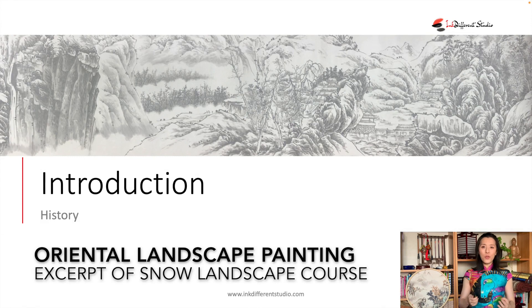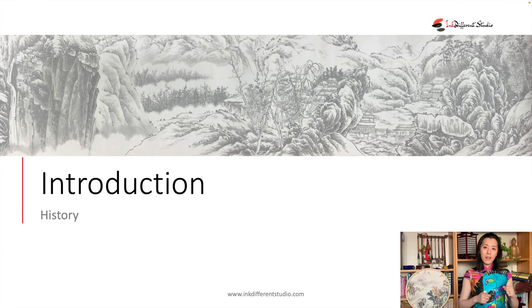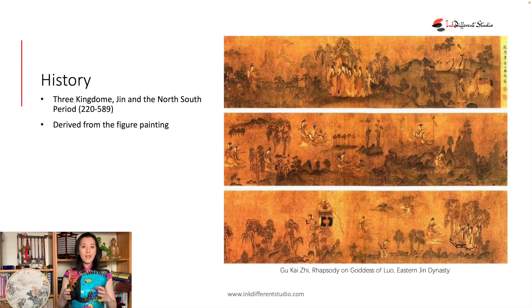Welcome to the Ink Different Studio. This is Fiona speaking. Today we're going to talk about the overview of the history of oriental landscape painting. We call it either mountain-water painting — literally 'shanshui' — or water-ink painting, 'shuimo.'